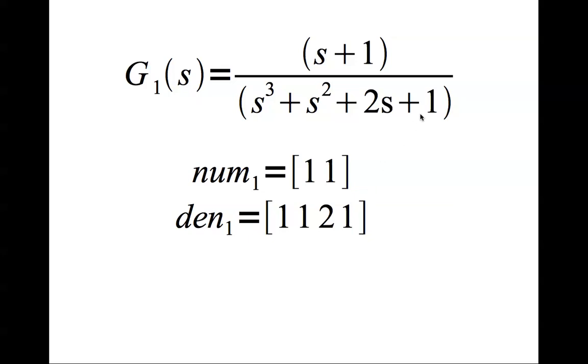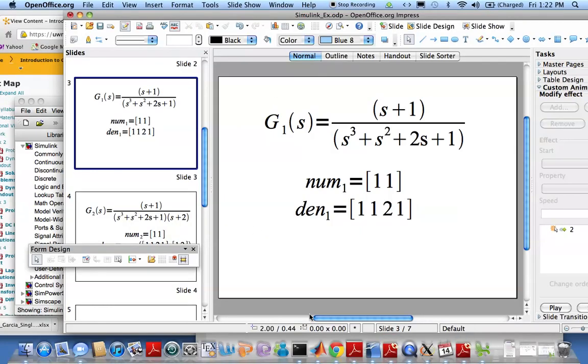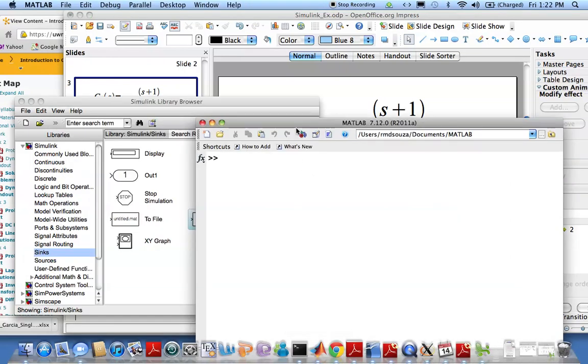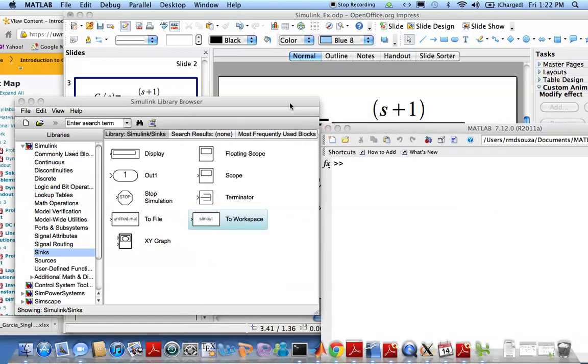One corresponds to the constant term, the two represents the coefficient of the s term, one corresponds to the coefficient of s squared, and one corresponds to the coefficient of s cubed. Let's go to MATLAB and we'll define two variables.